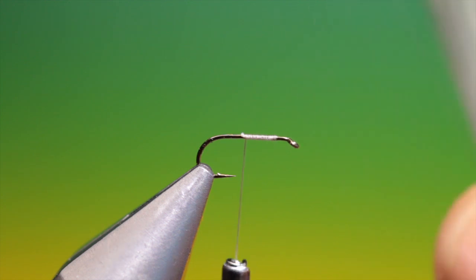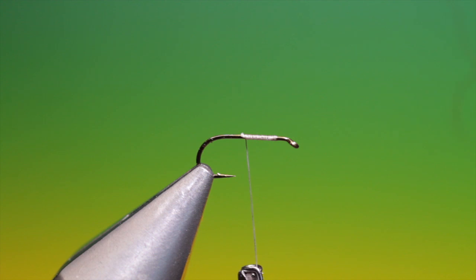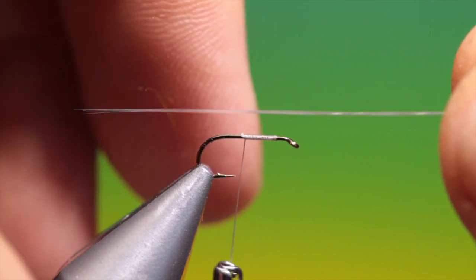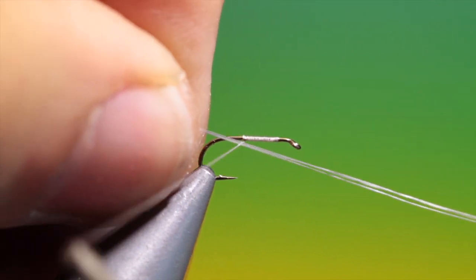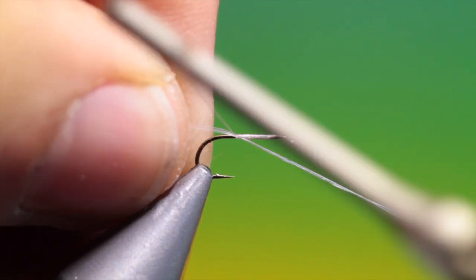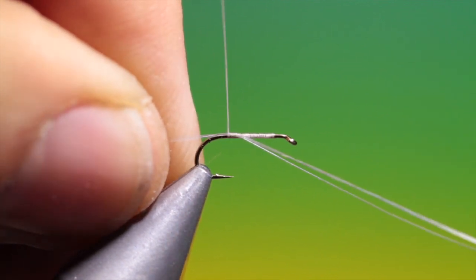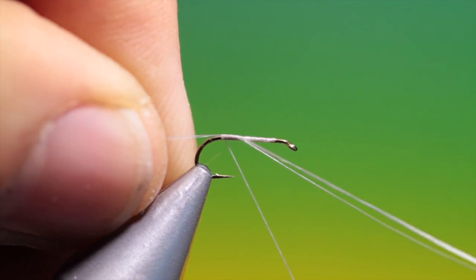Then what we need is some synthetic tail fibers. So we need three of these. These need to be quite long. So place these diagonally because they'll pull over when you tighten up onto top of the hook shank. And we'll tie these in back.